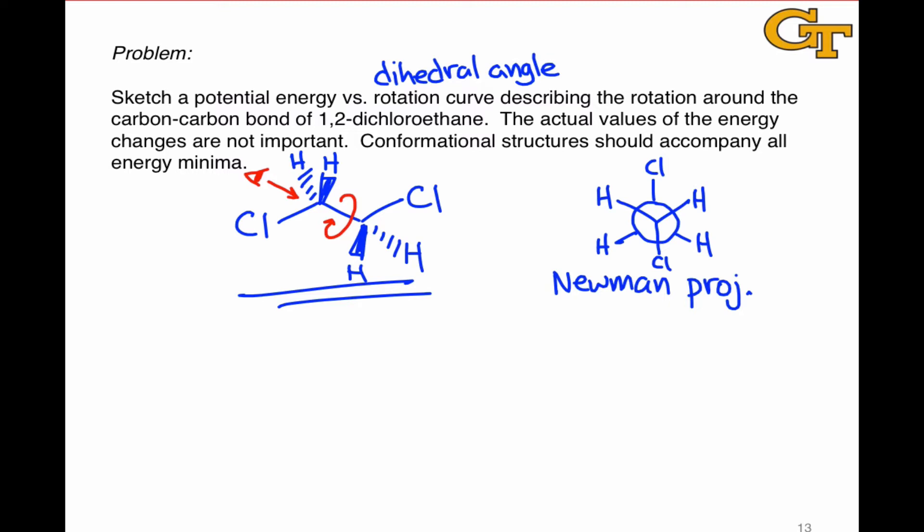This is a Newman projection of the specific conformation that's implied by this line angle structure on the left. The dihedral angle refers to the angle between the carbon-chlorine bonds. Really we could pick any pair of bonds on the adjacent carbons to use as the reference for the dihedral angle, but when it comes to 1,2-dichloroethane, the two carbon-chlorine bonds are a nice point of reference since these are the unique bonds within the structure. The question is, how does the energy of the molecule vary as we rotate about the central carbon-carbon bond to change that dihedral angle?